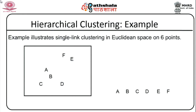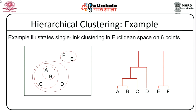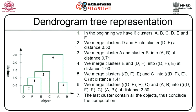For single-link clustering in Euclidean space on 6 points A, B, C, D, E, F: A and B are combined first, then E and F combine, then A-B and C combine, then A-B-C and D combine, and finally A-B-C-D and E-F combine to give the complete dendrogram. In the dendrogram, we start with 6 clusters. D and F merge at distance 0.5, A and B merge at distance 1, then D-F and E merge at distance 1.41, and so on until all are combined.